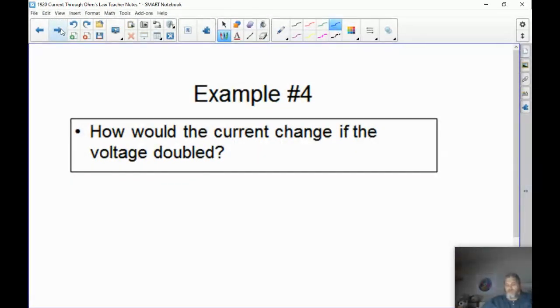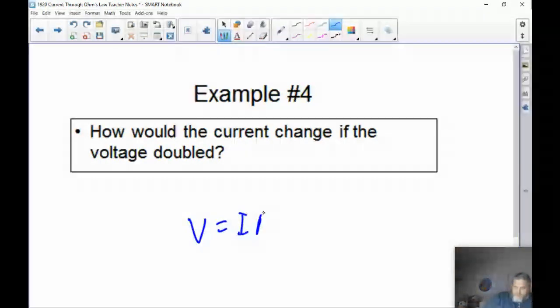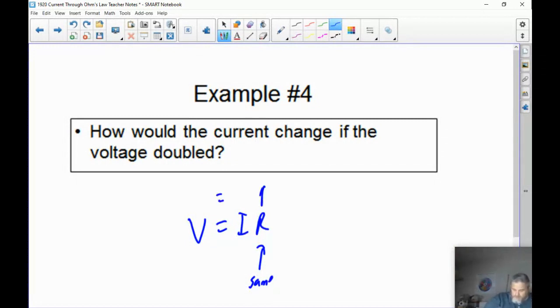How would the current change if the voltage doubled? This time, V equals IR. R doesn't change, this stays the same, so we put a 1 there. And if I double the voltage, what has to happen to the current to make this equation work? Of course, this would have to be 2 because 2 times 1 is 2. So this time, the current would double because voltage and current are directly proportional. If I double one, I double the other. Pretty straightforward.